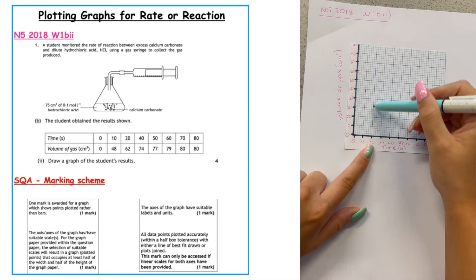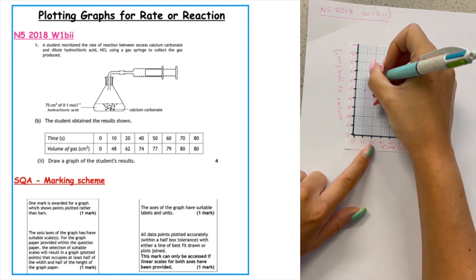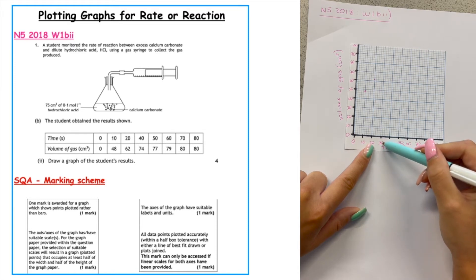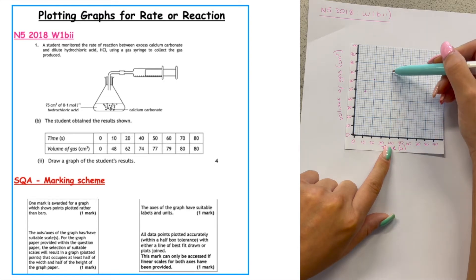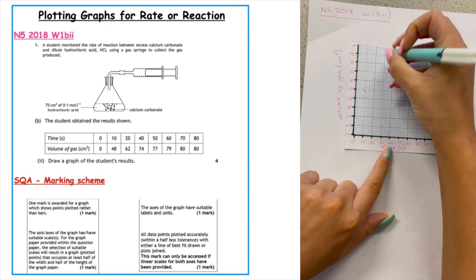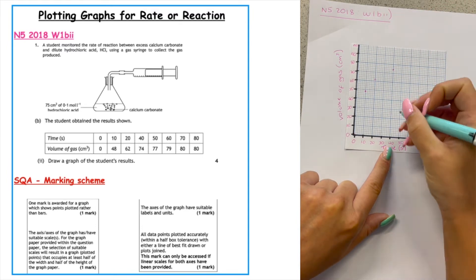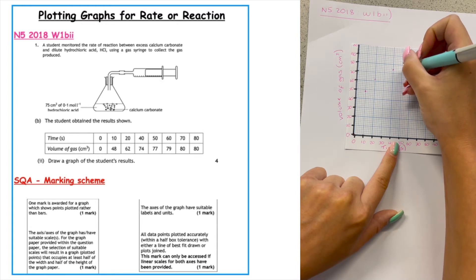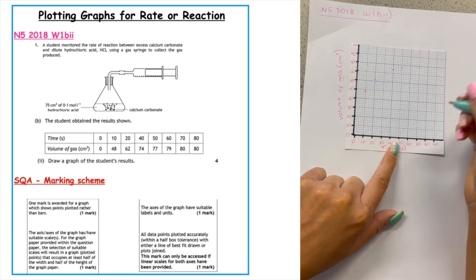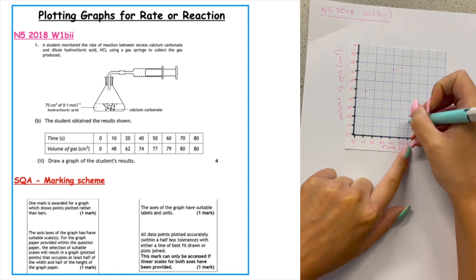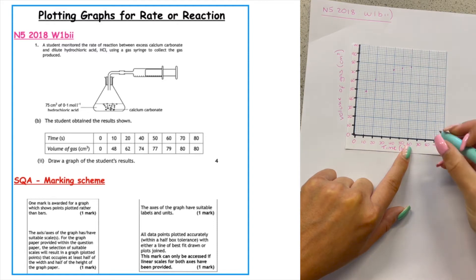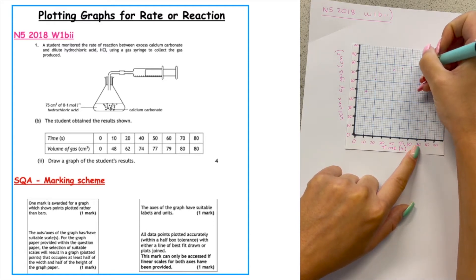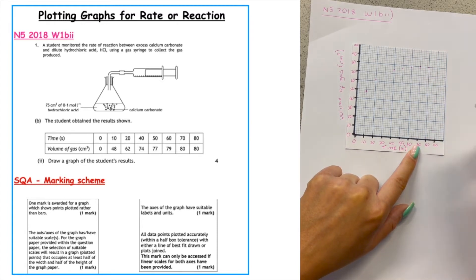Note that the next time recorded in the table is 40 seconds, not 30 — be careful not to make that mistake. At 40 seconds, volume is 72: go up to 70, then two boxes up gives 74 — actually land on 72. At 50 seconds, volume is 77: go up to 70, count 72, 74, 76, then half a box for 77. At 60 seconds, volume is 79: same approach — 72, 74, 76, 78, then half a box. At 70 and 80 seconds, the volume is 80, which is a nice easy point to plot.